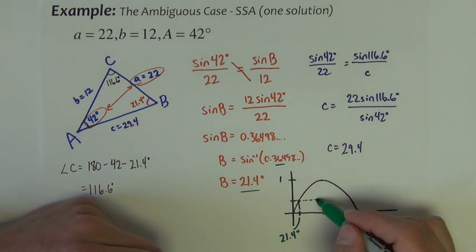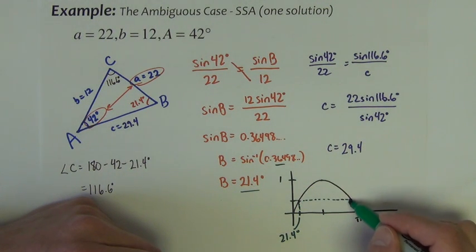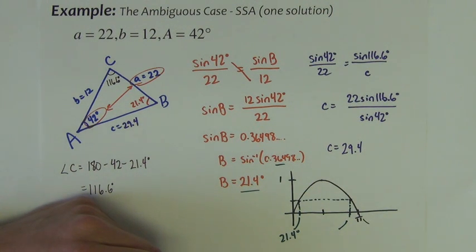Well, if I continue tracing this over, it also hits the graph over here. So what's 180 minus 21.4? We find that this other angle could be 158.6 degrees.